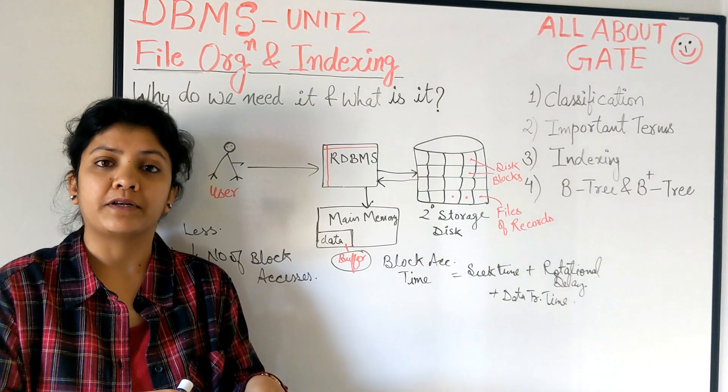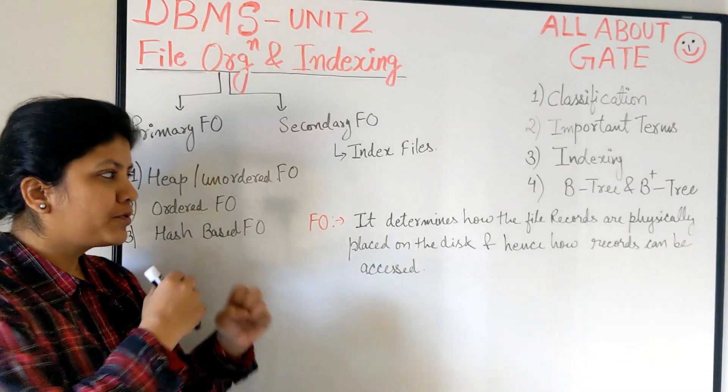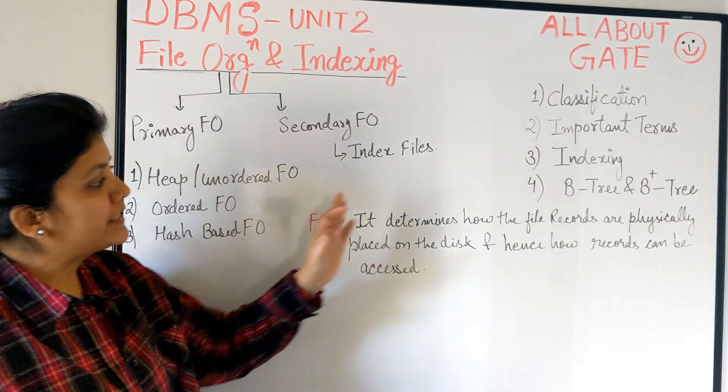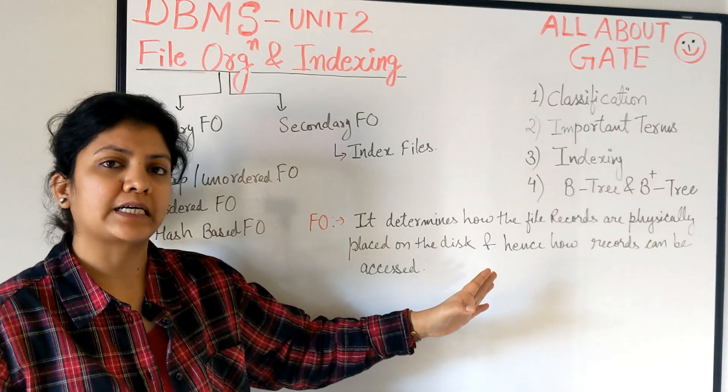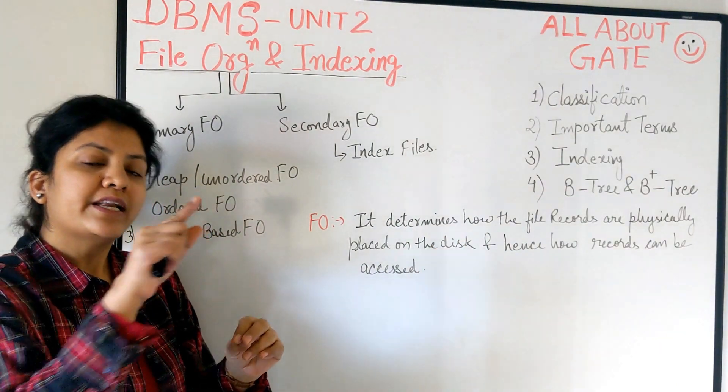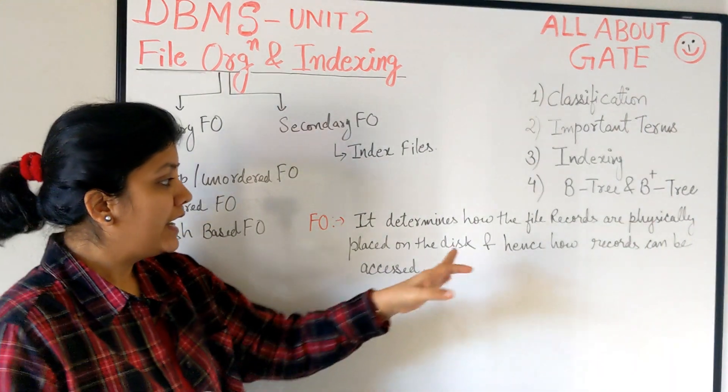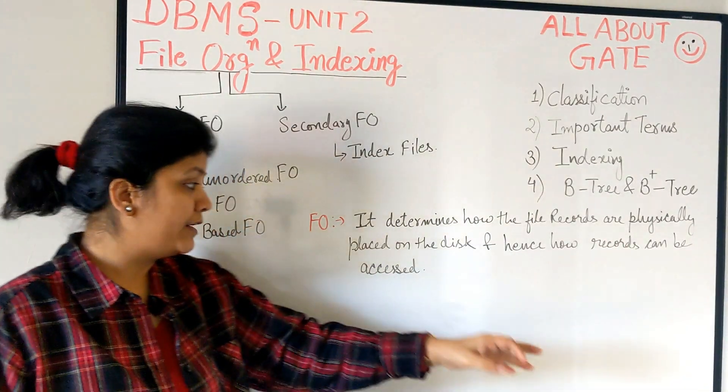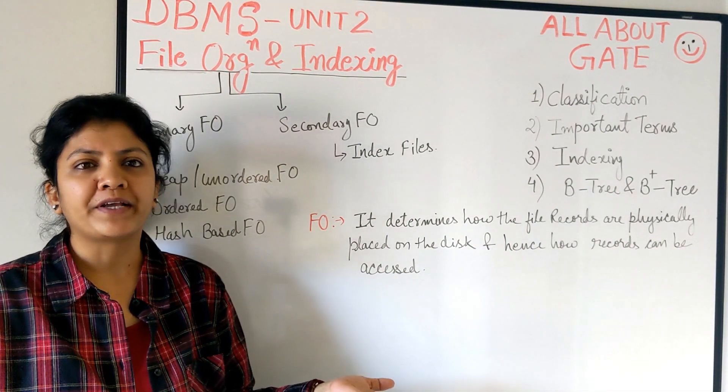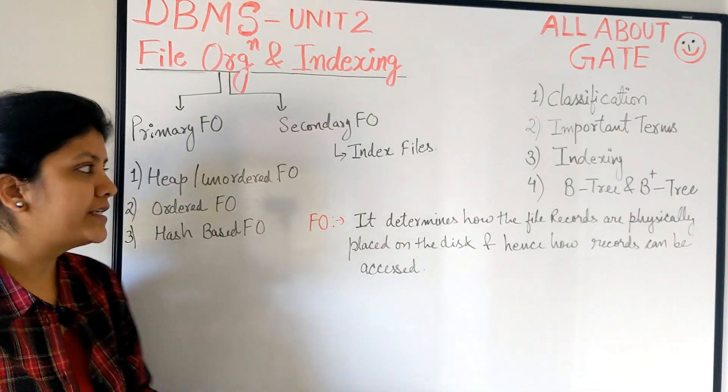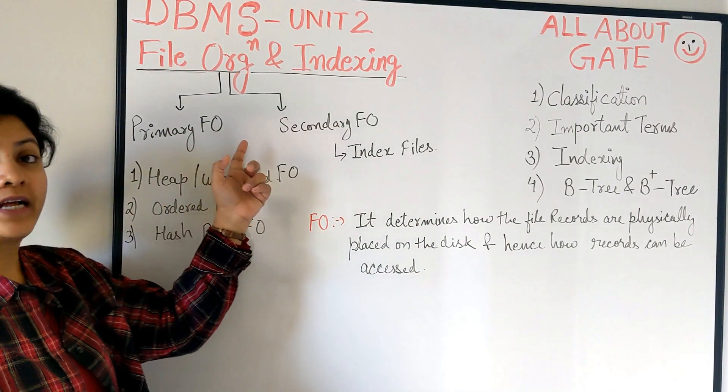Let me define file organization in a proper way: it determines how the file records are physically placed on the disk, how you're going to store record by record. There's a strategy behind it and hence how the records can be accessed. There are multiple ways of doing this. We can have primary file organization and secondary file organization.